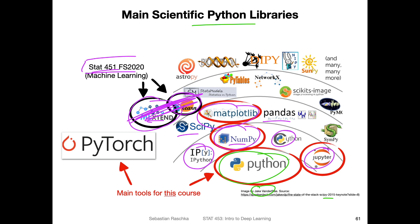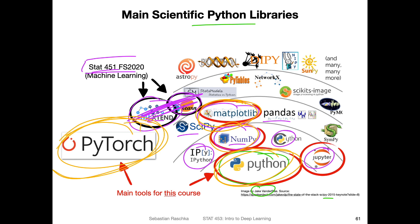In this class, we will mainly be using Python and PyTorch — PyTorch is the library built on top of Python. We will also be using a little bit of NumPy for some basic computing, especially in the next lecture and in the third lecture on perceptrons. And we'll occasionally use matplotlib to make visualizations, but the focus will really be on PyTorch.